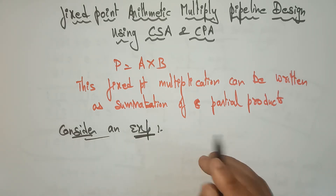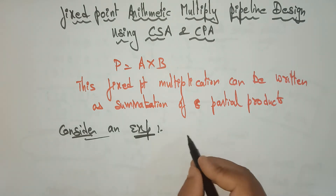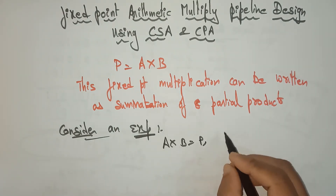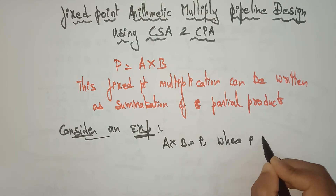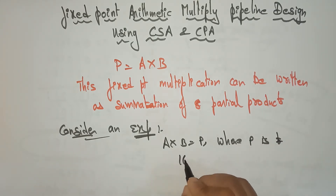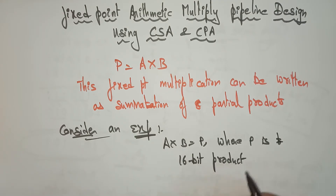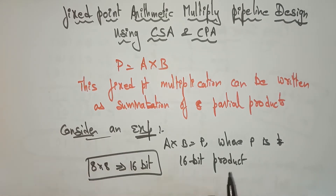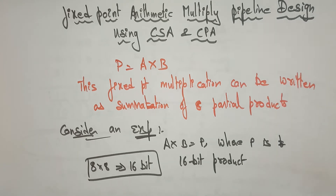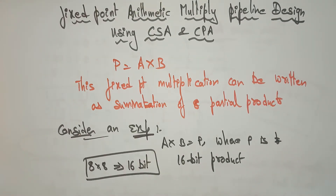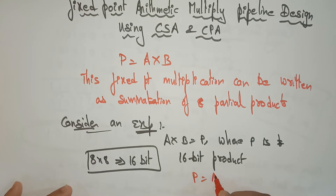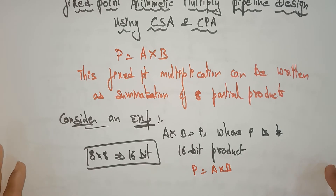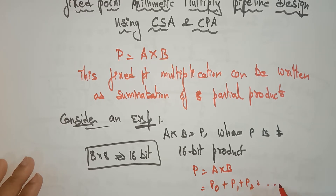The multiplication of two eight-bit integers A cross B is equal to P, where P is a 16-bit product. Whenever you are trying to multiply two 8-bit numbers, the result — the product — will be 16 bits. So the fixed-point multiplication can be written as a summation of eight partial products: P equals A into B, which is P0 plus P1 plus P2 up to P7.